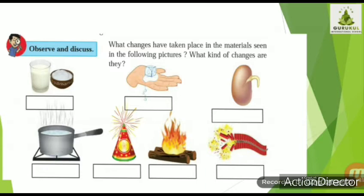In picture four, water is boiling — there is conversion of water to water vapors. From water vapor we can get back the water, so it is a physical change. In the fifth picture, firecrackers are exploding. This is a man-made change, a fast change — whenever you burst a cracker it burns immediately. It is also a chemical change and an irreversible change.